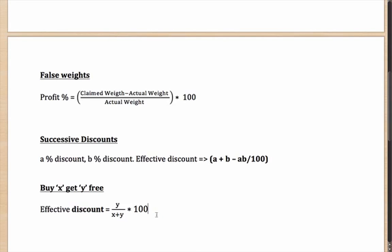Let's say each of the goods costs 1 rupee. Then what is the marked price of the total goods that you are taking home? Marked price of the total goods is x + y. How much did you actually pay for it? Since you bought x, you paid x rupees. So what is the discount that you got?